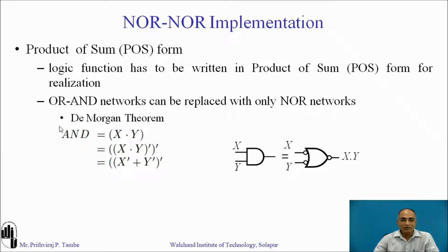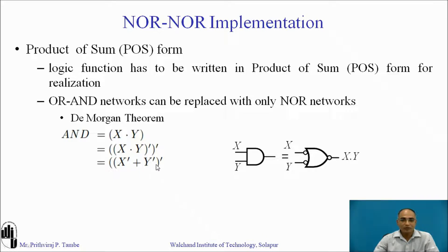Here is De Morgan's theorem applied to an AND gate example. The AND function x · y, after applying involution, becomes x · y double bar. Then applying De Morgan's theorem we get (x̄ + ȳ)̄. If you imagine the first expression as a gate we have an AND gate with inputs x, y. The last expression corresponds to a NOR gate with inverted inputs — x̄ and ȳ applied to a NOR gate. This is how the gate looks with inverted inputs.